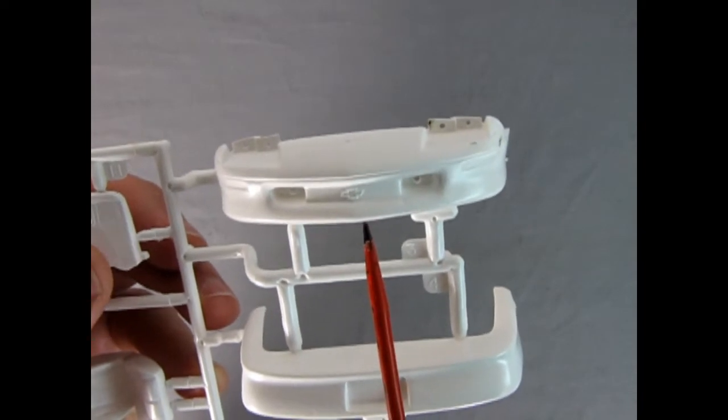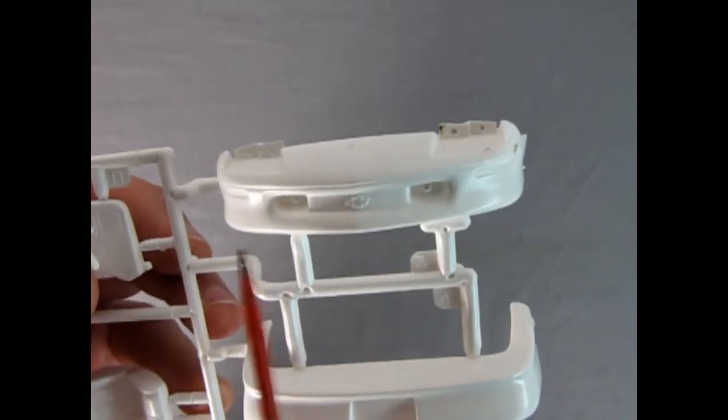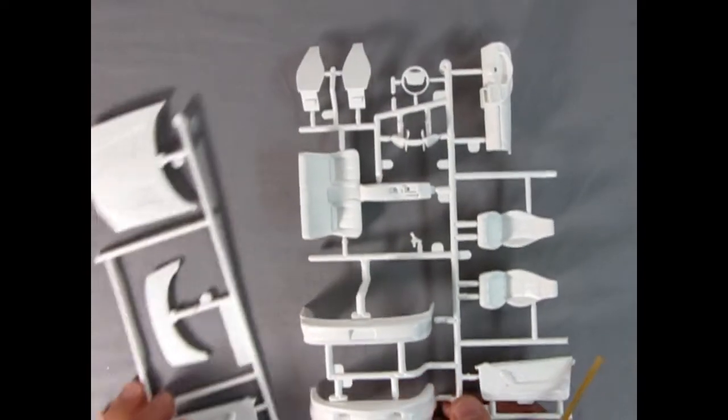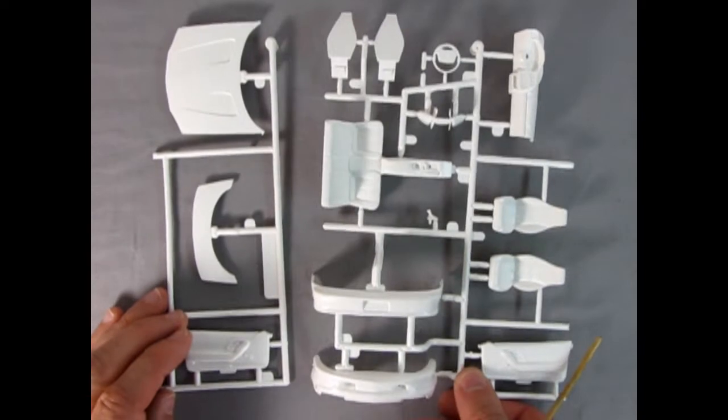There's a little Camaro emblem, Chevy emblem, pardon me, bow tie right in the center of the grille. Again really excellent looking work. The seats look like real seats with the leather and all the little sewing in there. I don't know what I'm trying to say. Anyway there's our parts trees.